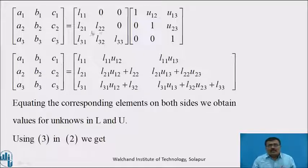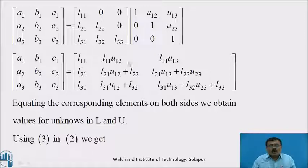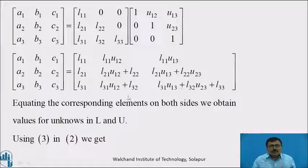Taking the product of the lower and upper triangular matrices, the coefficient matrix A becomes: first row [L11, L11·U12, L11·U13], second row [L21, L21·U12 + L22, L21·U13 + L22·U23].